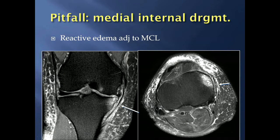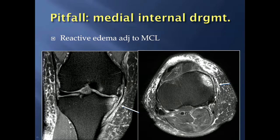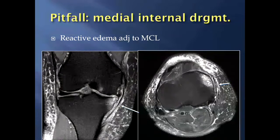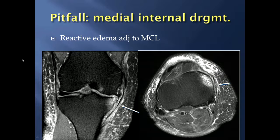There's a pitfall when evaluating the MCL: medial joint internal derangement — such as a meniscal tear or bad osteoarthritis on the medial side — can produce edema around the medial collateral ligament that mimics an MCL sprain. In this patient's case, there was no acute injury, and so this was reactive edema in the setting of medial compartment internal derangement.